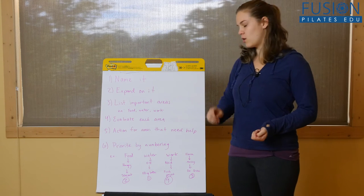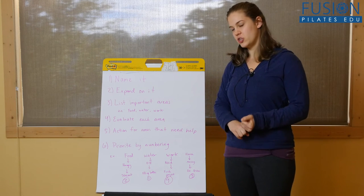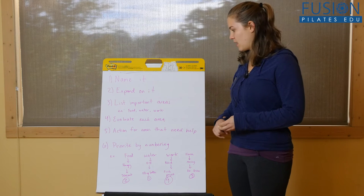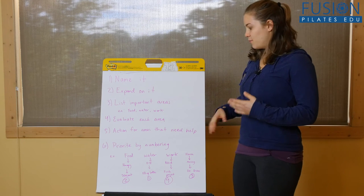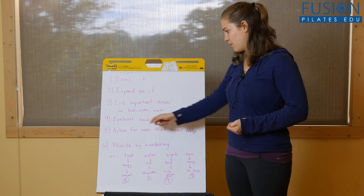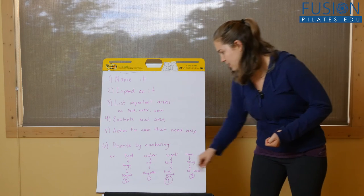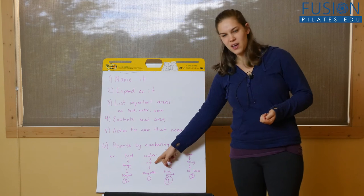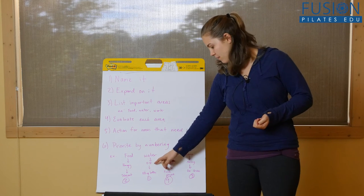The next step is you pick one action item for each category. You would say, okay food, if I need food I should eat something. That's my action item. You write it down underneath the category and I did that down here. Water, I'm okay on water but you know that won't last forever.